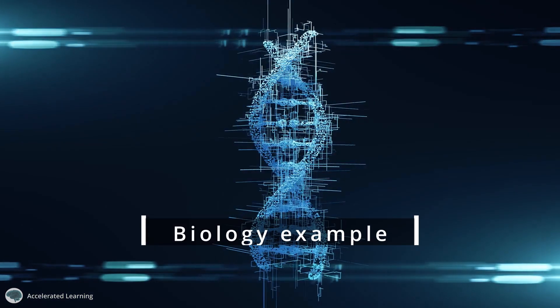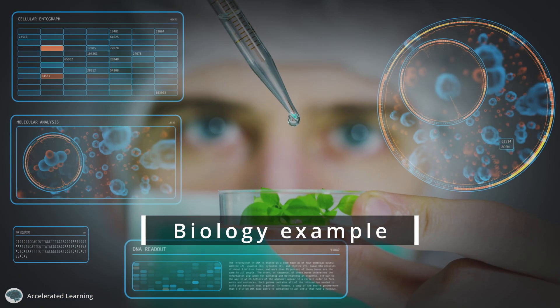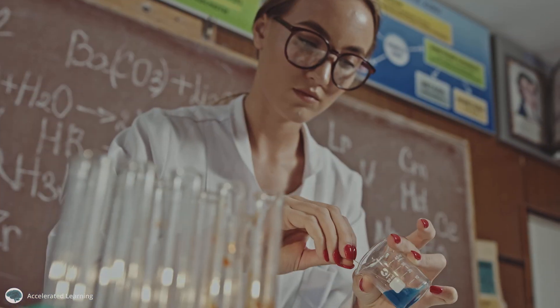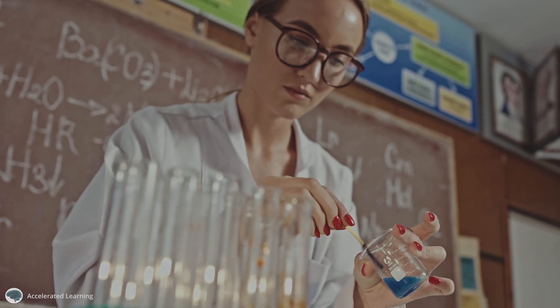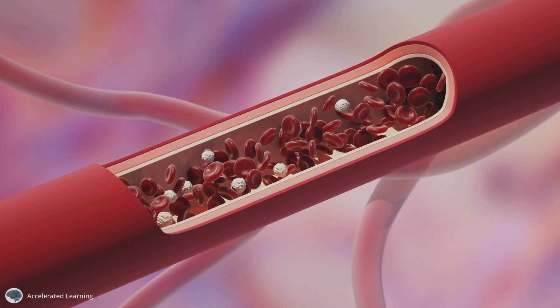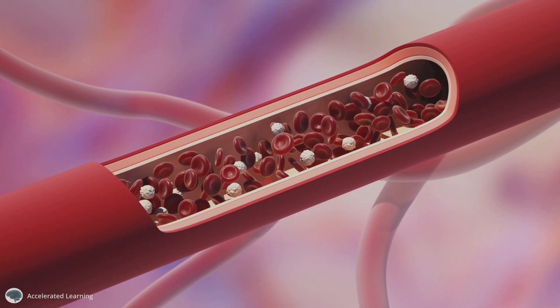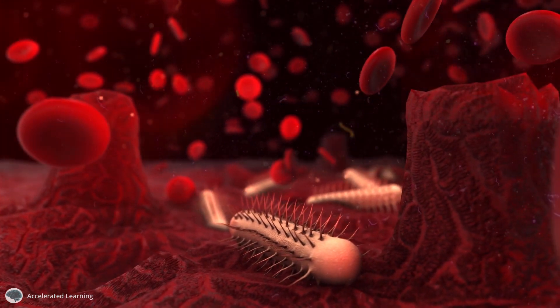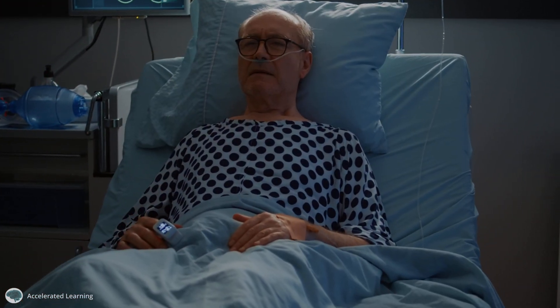In an example from biology, the Goldilocks rule may refer to the concept of homeostasis, which is the ability of an organism or system to maintain stable internal conditions. For example, the pH level of blood must be within a specific range for the body to function correctly. Too high or too low of a pH can lead to health problems. The Goldilocks rule suggests that the internal conditions of an organism must be within a specific range to maintain homeostasis.